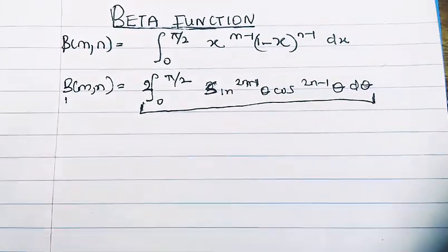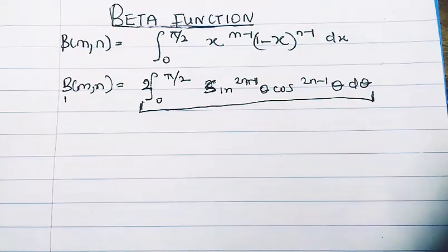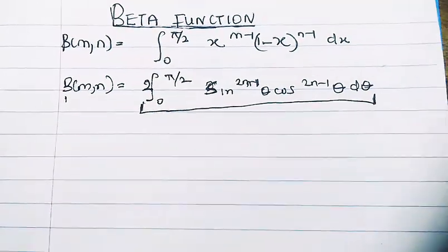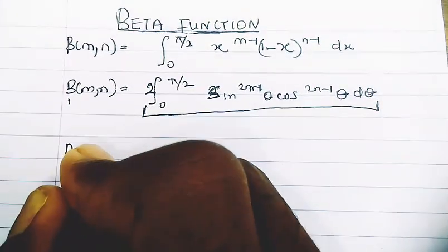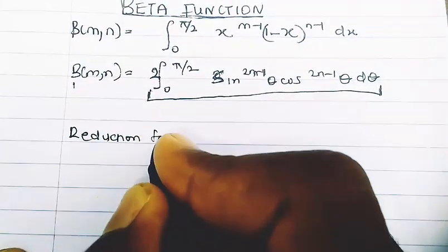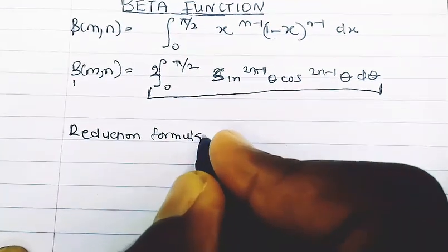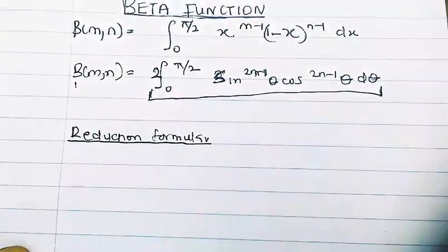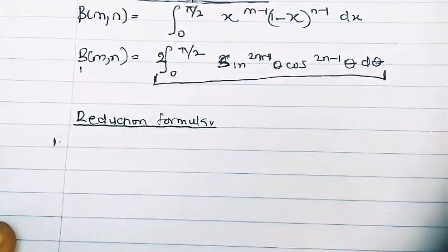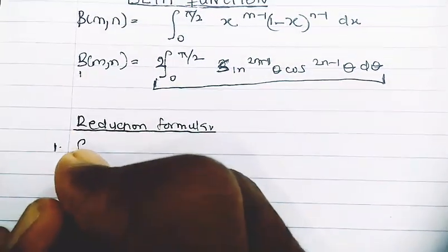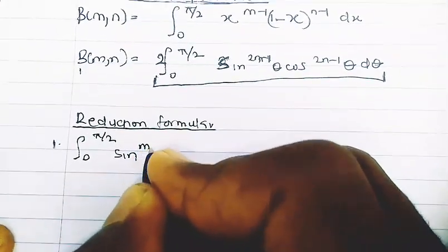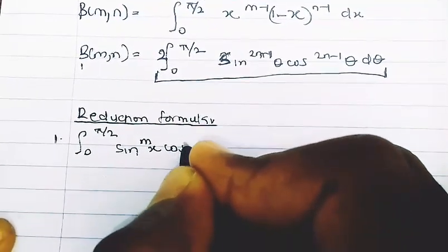I'm going to make use of two forms of reduction formula in deriving the third form of the beta function. I know this all sounds boring, but when we derive the formula you actually really enjoy it. Our first reduction formula says: the integral from zero to pi/2 of sine^m(x) cos^n(x) dx...